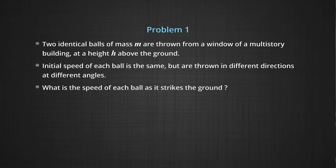The first example we are taking is of two identical balls which are projected from a tall building with the same initial velocity. The projection can be in any direction — it could be at an angle, horizontal, or any way you like — but the initial velocity must remain the same, and they should be thrown from the same height.